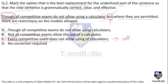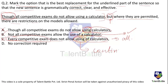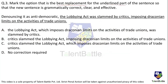The most grammatically correct is option B: 'Not all competitive exams allow the use of a calculator, but where they are permitted there are restrictions on models allowed.' Also note: 'using calculators' is incorrect because 'using' implies a continuous ongoing action. The correct form is 'the use of a calculator' in simple present. Answer is option B.